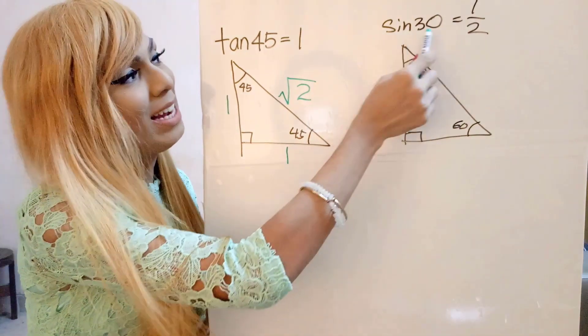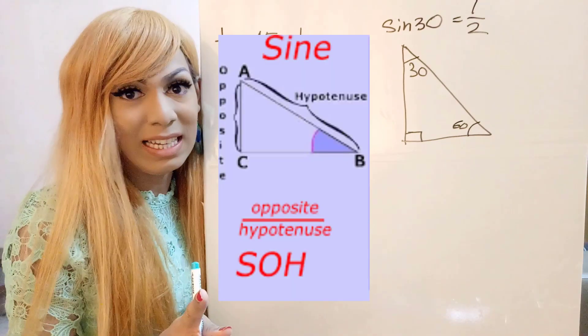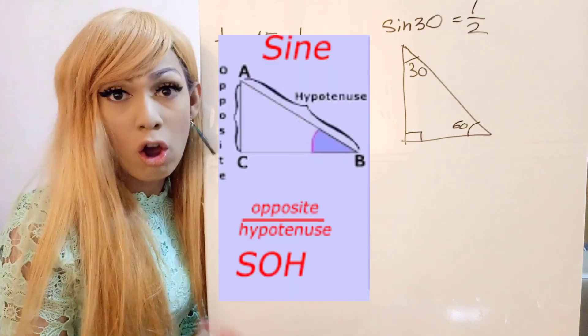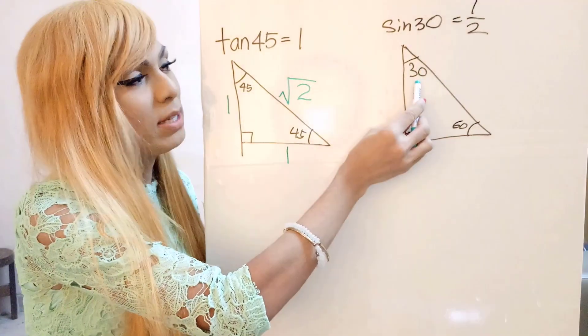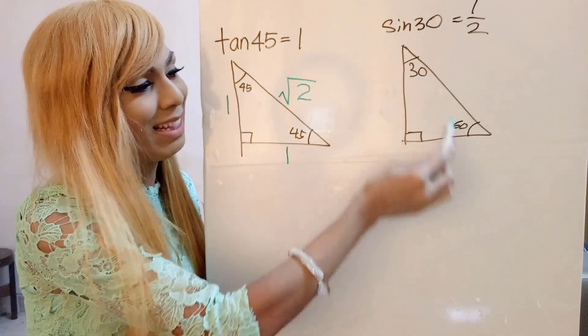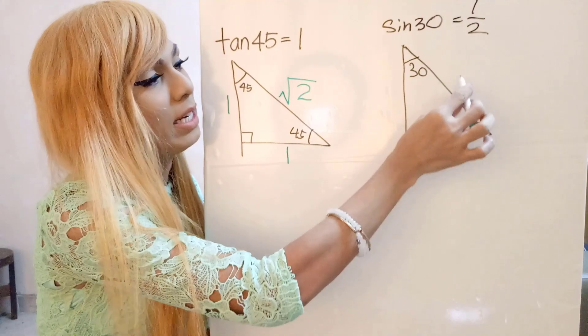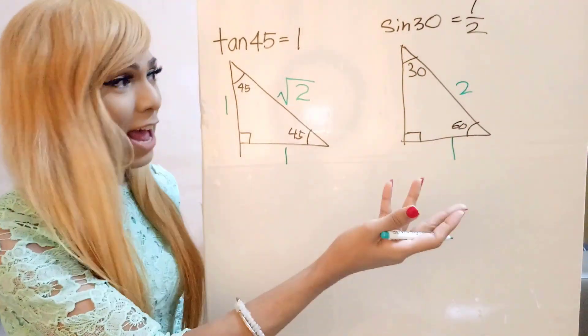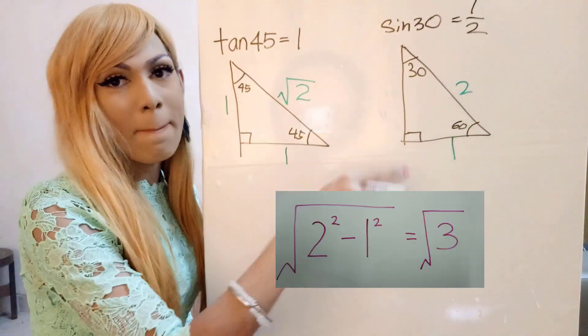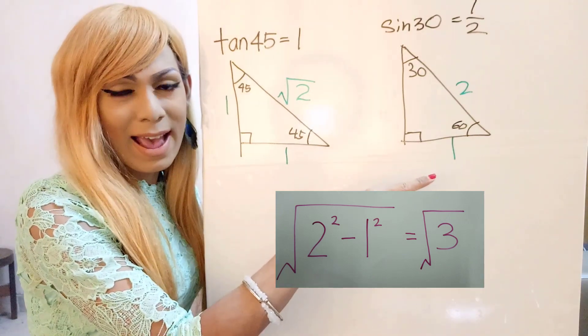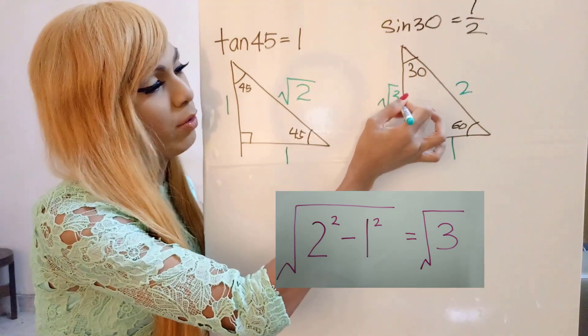And then for this triangle, sin 30 is equal to 1 over 2. So we have to remember, sin is actually SOH which is opposite over hypotenuse. So sin 30, opposite for this 30 is this line which is 1 and then the hypotenuse is 2. By using that value, we can easily find the length of this which is 2 square minus 1 square and then square root the answer. So we will get square root 3.